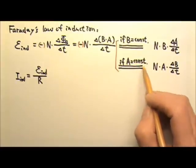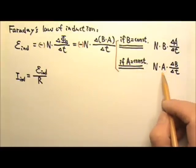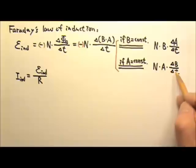If the area is a constant, we can take the area out of the delta, so this will be n times a times the rate at which the magnetic field changes.